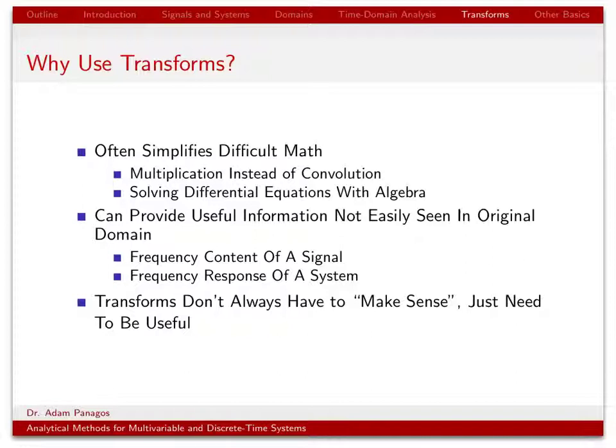One reason is that transforms often simplify difficult math. The classic example is that nobody really likes doing convolution. The convolution integral isn't horrible, but it's definitely a little tedious. So instead of having to do convolution in the time domain, if we take the Fourier transform, convolution in time turns into multiplication in the frequency domain. We can avoid doing convolution by computing the transform and resorting to normal multiplication.